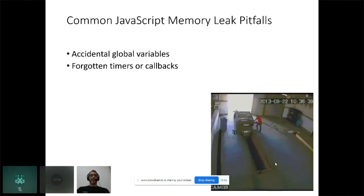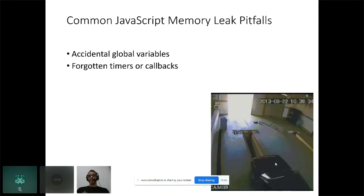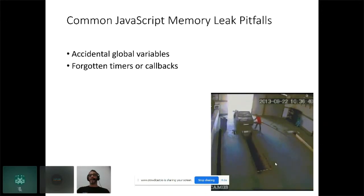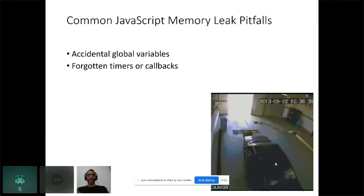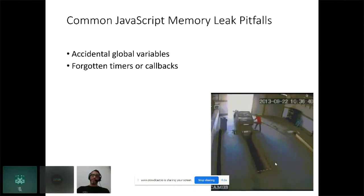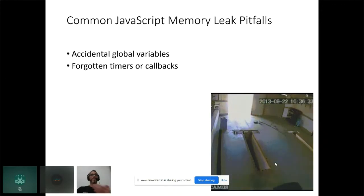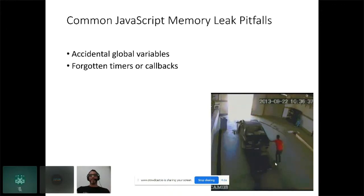Another variant is callbacks for functions — for example an onClick handler attached to an object that you don't clear. When that object is no longer needed you may forget to remove the callback. You can use clearInterval, clearTimeout, or dereference the callbacks you're using to avoid this pitfall.